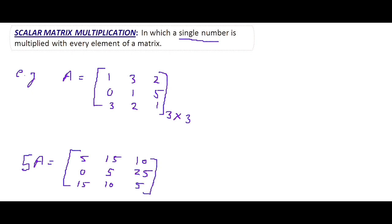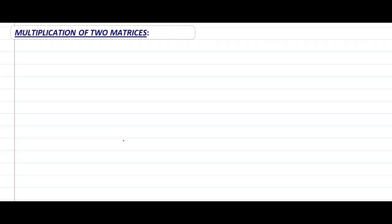Like this, we multiply any matrix by a scalar number. Now, multiplication of two matrices.